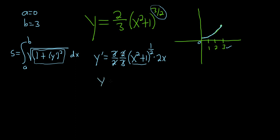This is really convenient because the 3's cancel and so do the 2's. So y prime is equal to 2x times (x squared plus 1) to the 1 half. So now let's go ahead and square this.